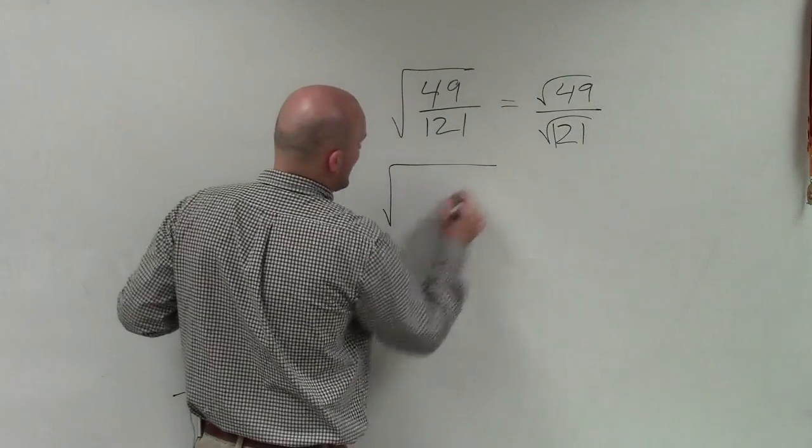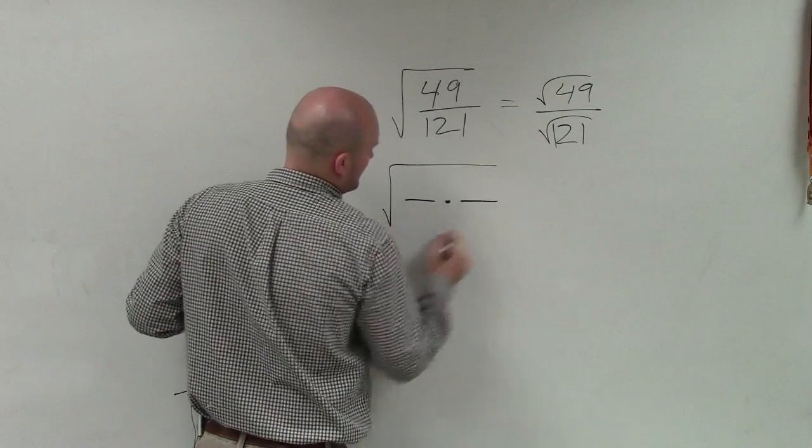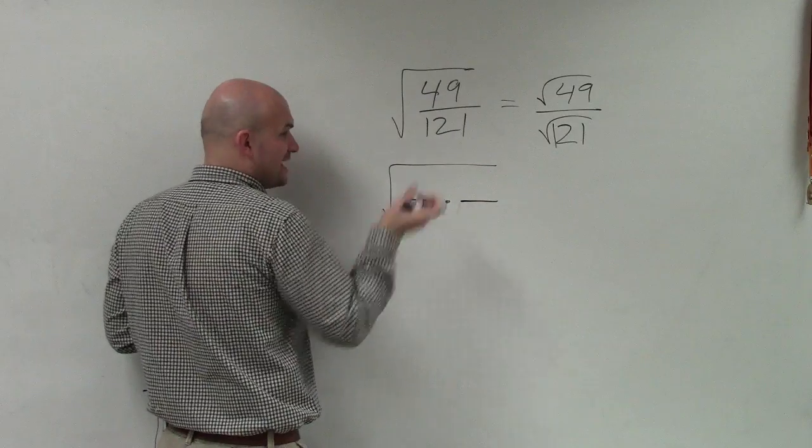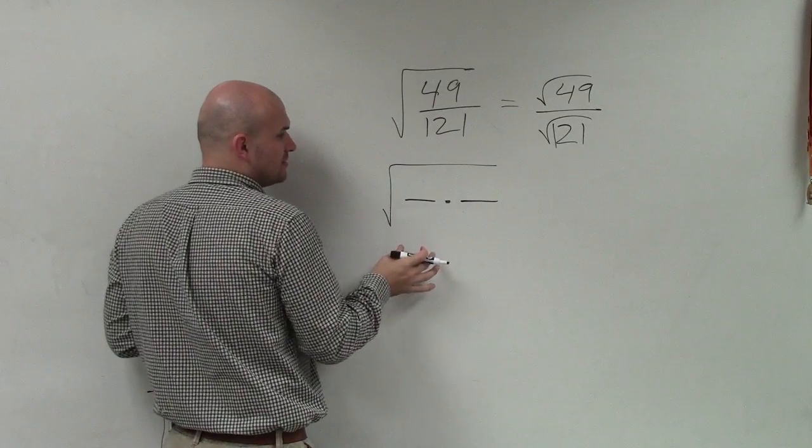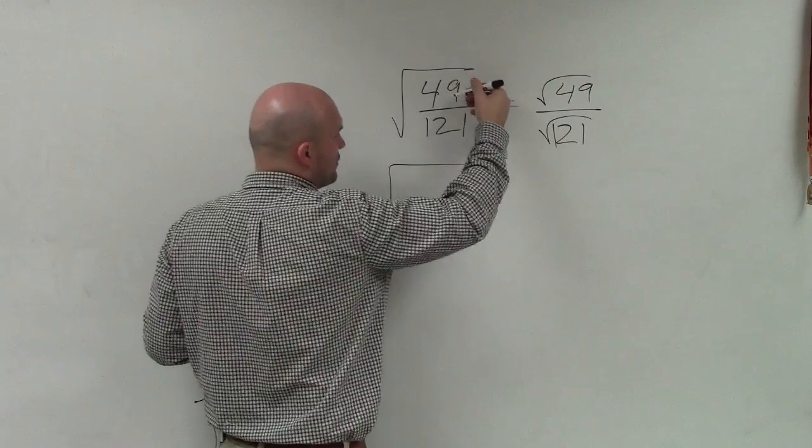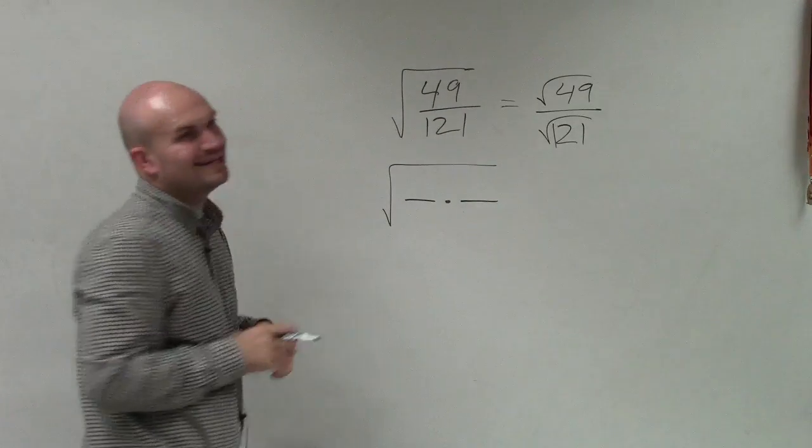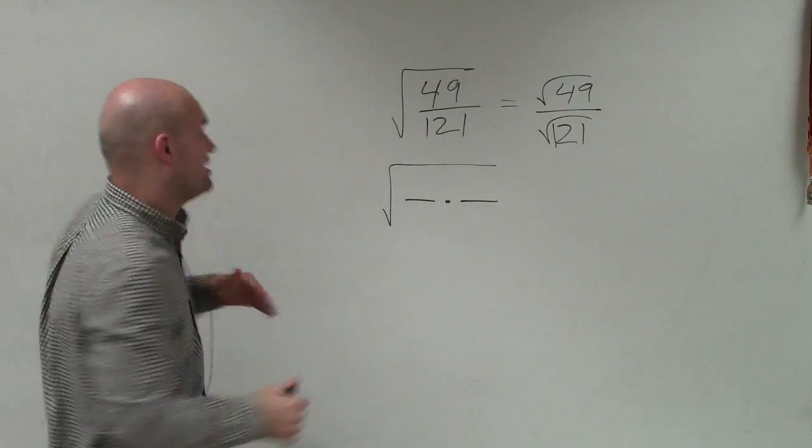We're looking for two fractions that are going to multiply to give us 49 in the numerator and 121 in the denominator that are exactly the same, right?